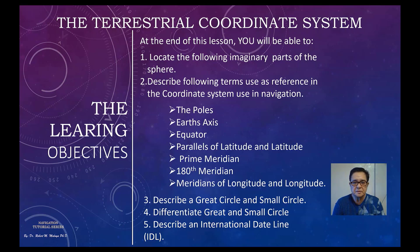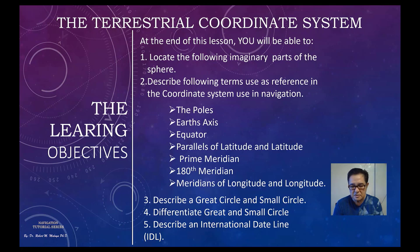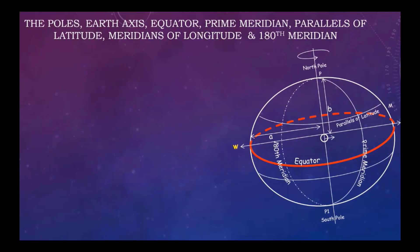The learning objectives for this lesson: you will be able to locate the imaginary parts of the sphere, describe terms used as reference in the coordinate system used in navigation — the poles, Earth's axis, equator, parallels of latitude, latitude, prime meridian, 180th meridian, meridians of longitude, and longitude itself.